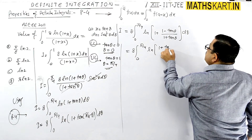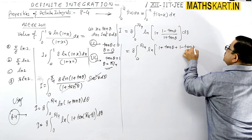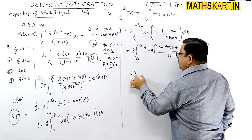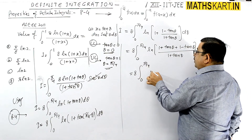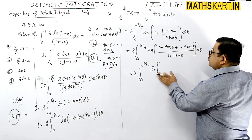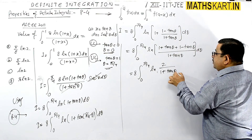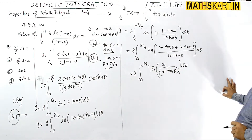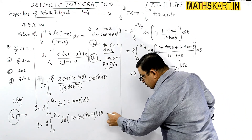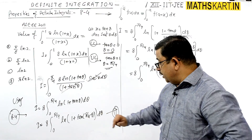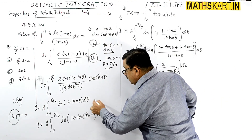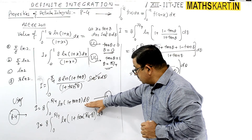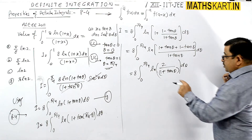Simplifying: 1 plus (1 minus tan theta) over (1 plus tan theta) equals (1 plus tan theta plus 1 minus tan theta) all over (1 plus tan theta), which gives 2 divided by (1 plus tan theta). So the expression inside the log becomes ln of 2 upon (1 plus tan theta), which equals ln 2 minus ln(1 plus tan theta). This is also 8 times the integral from 0 to pi by 4 of ln(1 plus tan theta) d theta — call this equation 2.